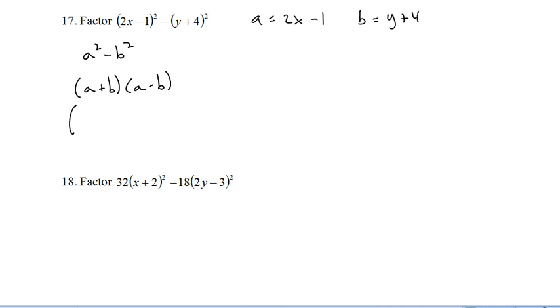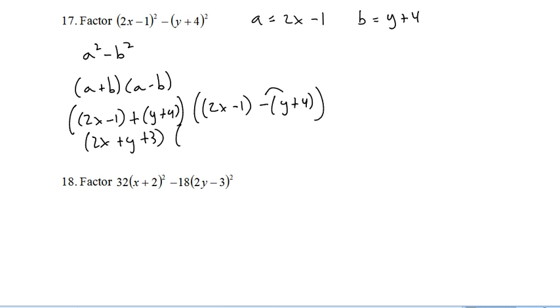This first guy I'm going to have 2x plus y plus 3, and my second guy here I'm going to have to multiply this negative through first. And then clean them up. Minus 1 minus 4 is minus 5. All done.